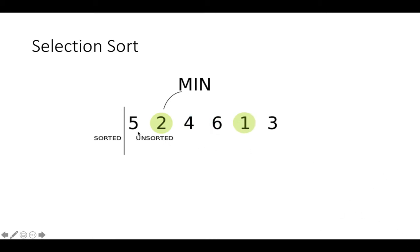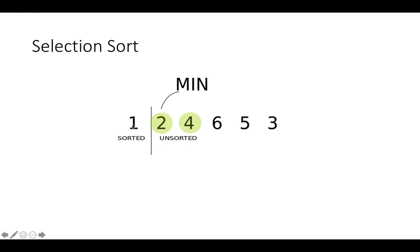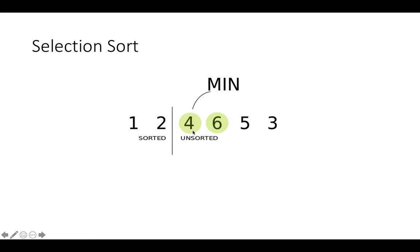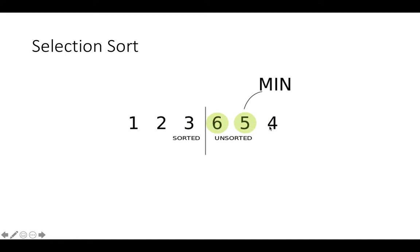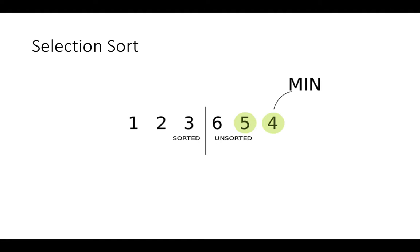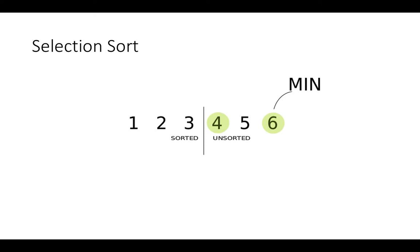In selection sort, we search for the minimum value of the elements. Let's say the minimum value is one — we swap one with the first element, placing it in the correct position. Then for the rest of the array, we find the minimum again and swap it with the second place, then find the next minimum which is three and swap it with the third place, and so on.